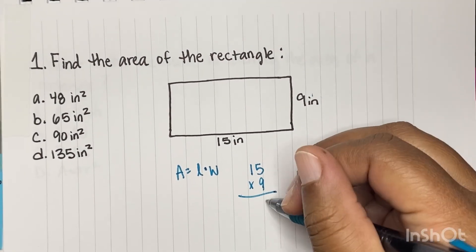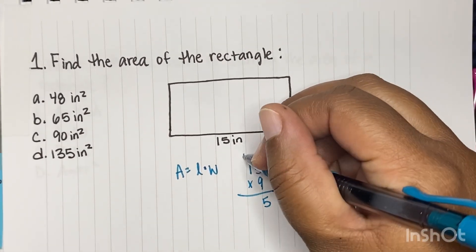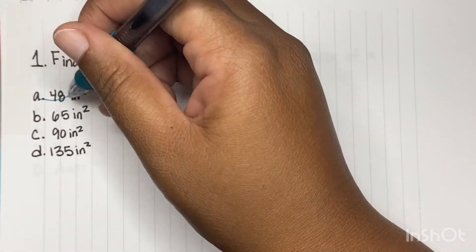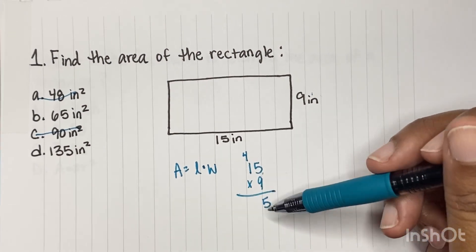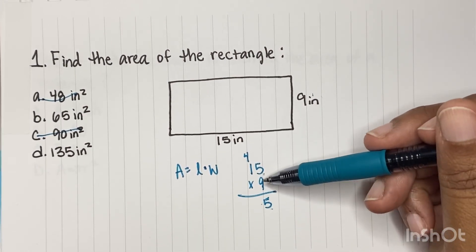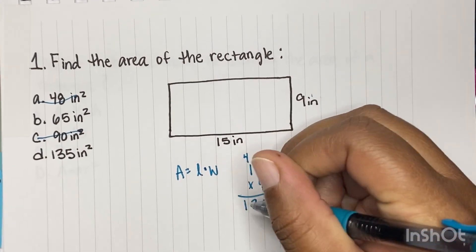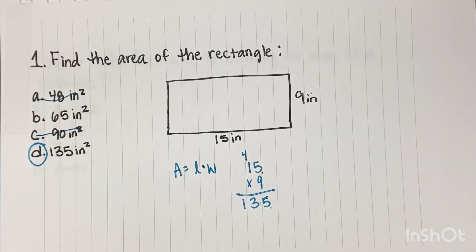Well, 9 times 5 is 45. And so just by us knowing that, we can eliminate A and C, okay? Because we know our number is going to end in a 5. And then 9 times 1 is 9 plus 4 is 13. So D is our answer. That is the area of a rectangle.